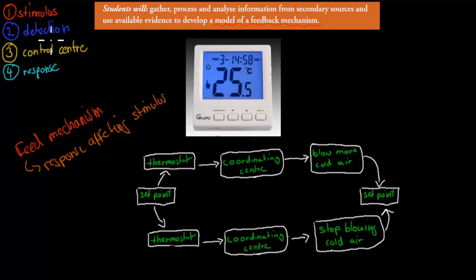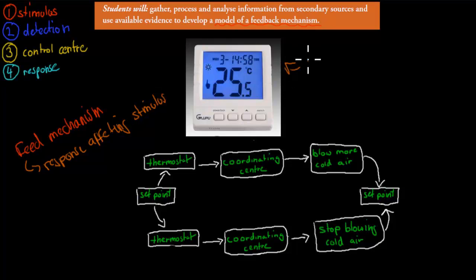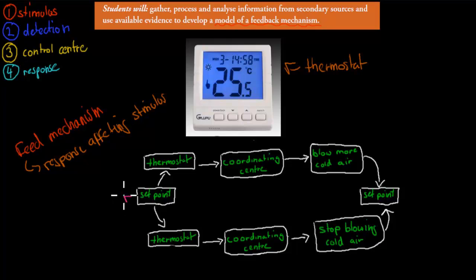Up here we've got stimulus, detection, control center, and response, labeled 1, 2, 3, 4, and here we have our aircon. So how aircons work is you might have a thermostat, and what it does is it measures the temperature of the surroundings. Here we've told our thermostat that we want to keep it at 25 degrees Celsius. So our set point — the point we want to keep it at — is 25 degrees Celsius.